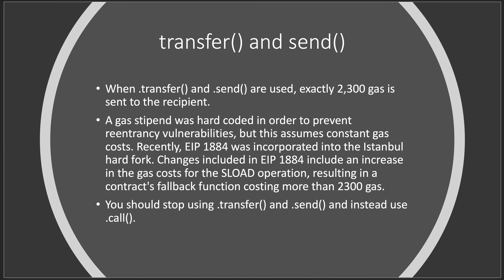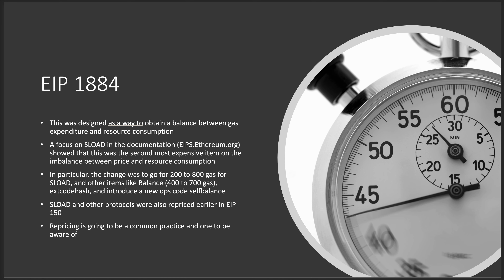EIP 1884 was incorporated into the Istanbul hard fork, giving an increase in gas costs for the SLOAD operation, resulting in a contract's fallback function costing more than 2300 gas. So you really want to stop using `transfer` and `send` and just keep `call`, mostly because of expenses. EIP 1884 shows that if you reprice these protocols the cost actually changes. In EIP 150, they changed the balance from 400 to 700, then to 2300, moving the goalpost to keep usage down.